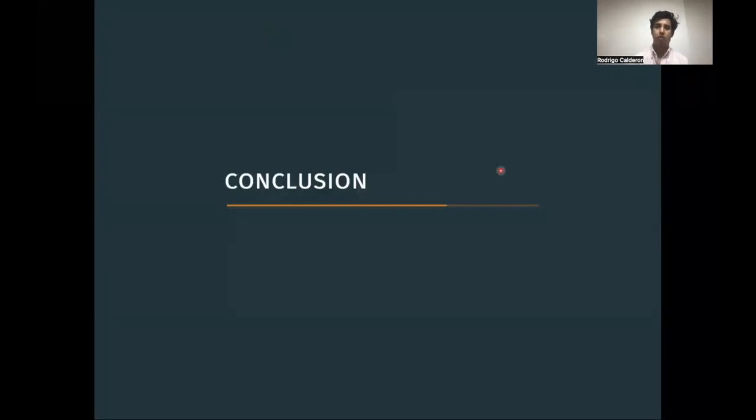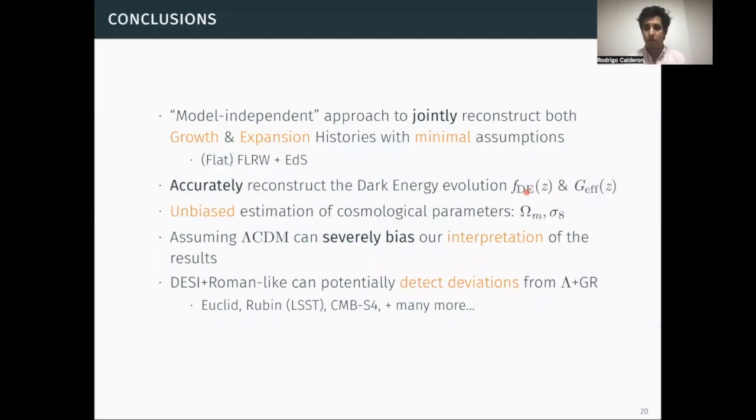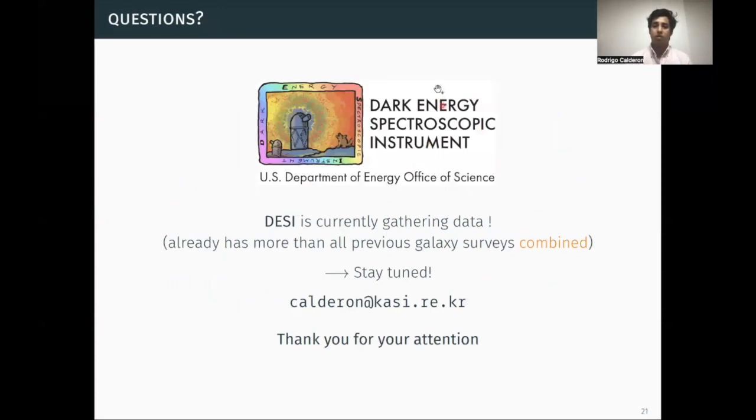So this brings me to my conclusions. Today I presented a model-independent approach to jointly reconstruct both growth and expansion history with reasonable assumptions, namely a flat FRW and Einstein de Sitter at high redshift. By applying this technique, we can actually accurately reconstruct the dark energy evolution encoded in this FDE function. Also, we can put constraints on deviations from GR by reconstructing this G effective in a non-parametric form. By doing this, we can get unbiased estimations of the cosmological parameters, omega M and sigma 8, which are crucial in our surveys such as Euclid or Rubin and CMB-S4 that will add to the constraining power. In principle, it will help us to test the existence of new physics. So that's all I have to say. Thank you very much for your attention and I look forward to your questions.